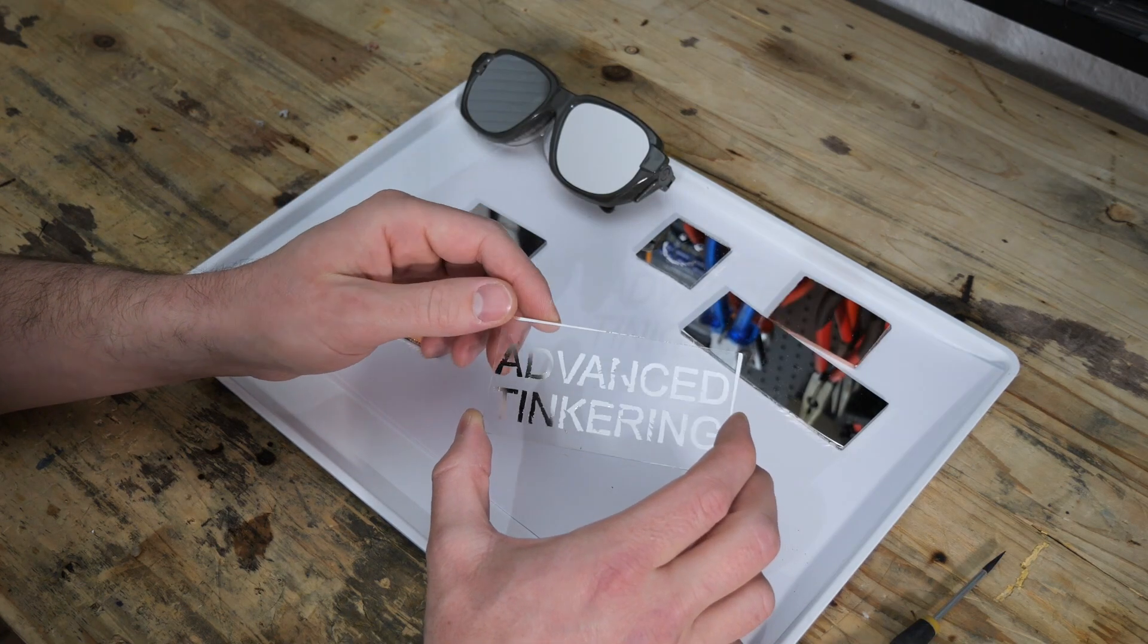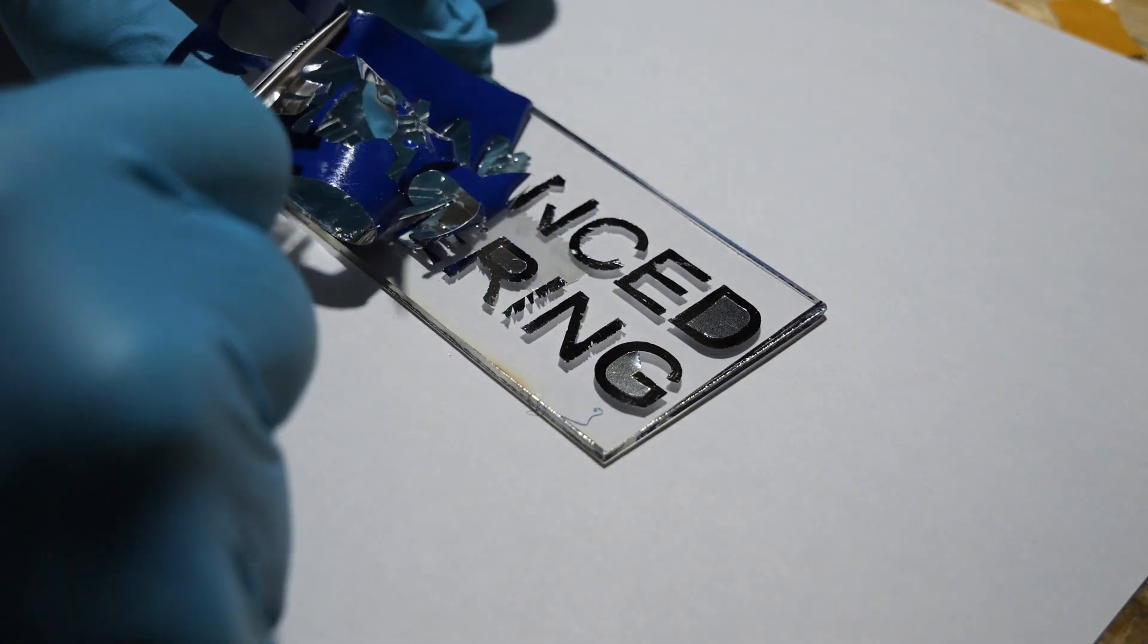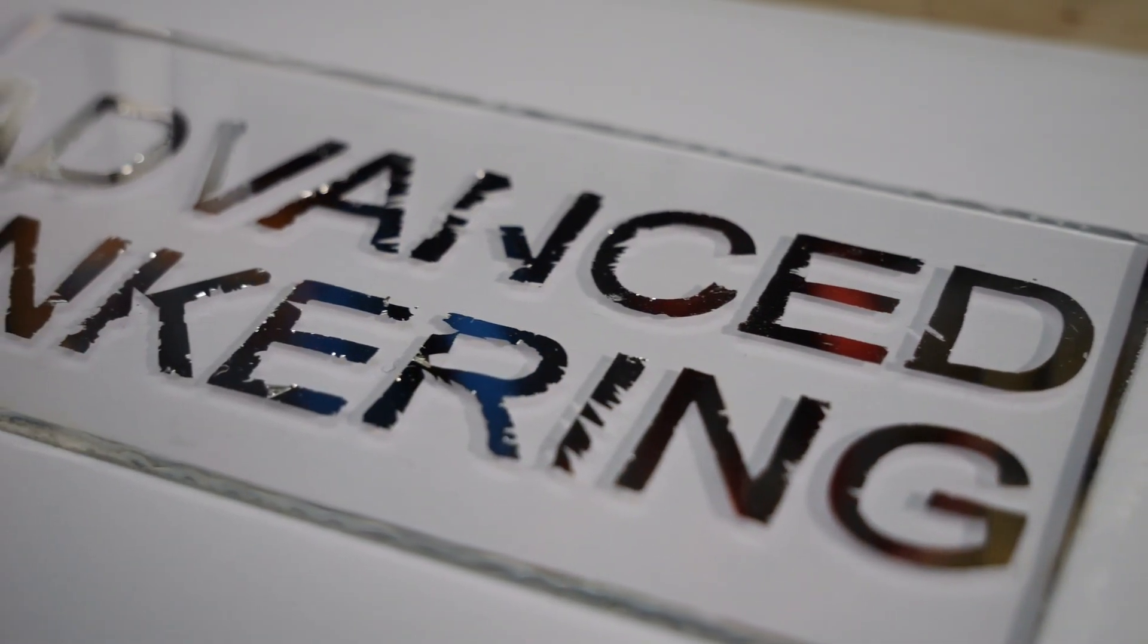The attempt to make my channel name out of pure silver wasn't that successful. When peeling off the stencil I also removed some of the deposited metal. Just as with the copper piece, the metal that did stay on the surface won't come off easily.